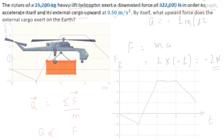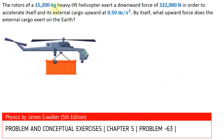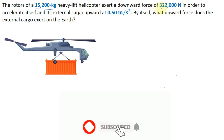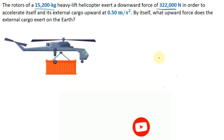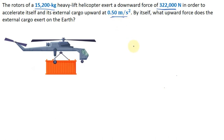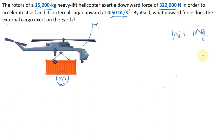In this question, the rotor of a 15,200 kg heavy-lift helicopter exerts a downward force of 322,000 Newton on the air in order to accelerate itself and its external cargo upward at 0.50 m/s². We need to find what upward force the external cargo exerts on the Earth. Let the mass of the cargo be small m and the helicopter mass be capital M. We'll first find m, then compute its weight.